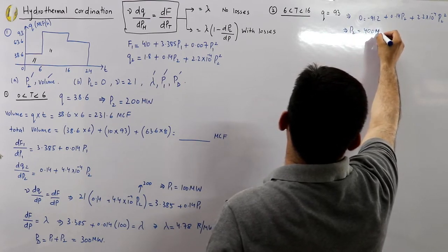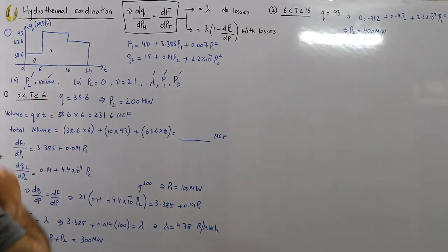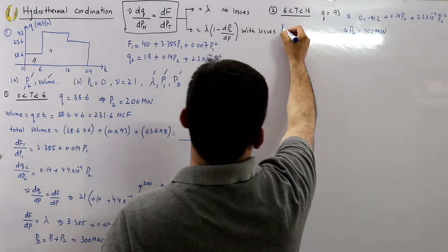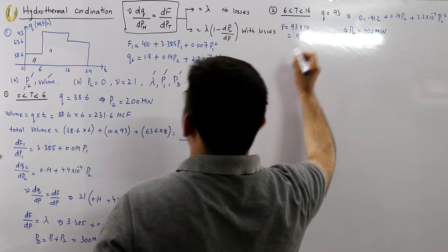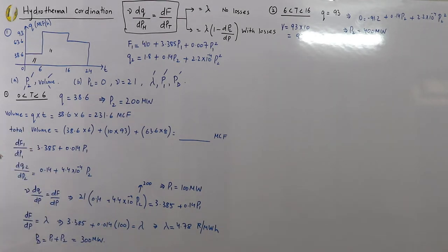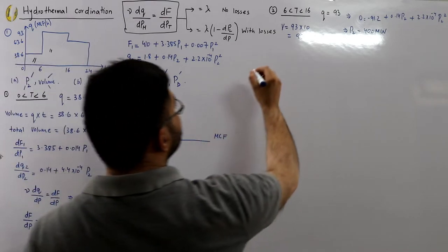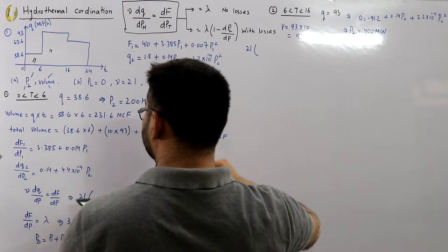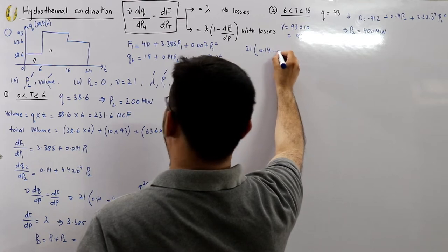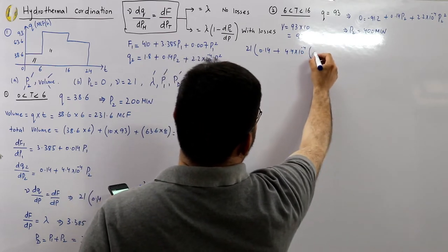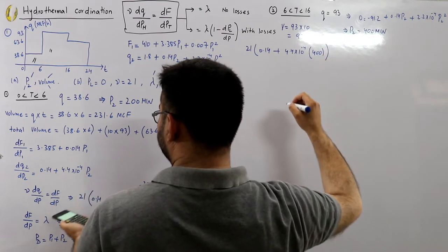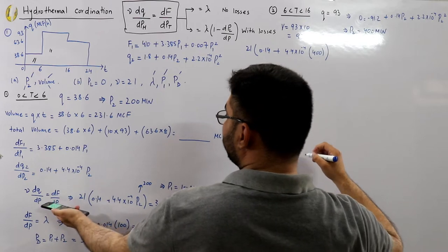The volume used in Interval 2 is V = Q × t = 93 × 10 = 930 million cubic feet. Applying the coordination equation again with μ = 21 and P2 = 400: 21 × (0.14 + 4.4×10⁻⁴ × 400) = 3.385 + 0.014·P1.